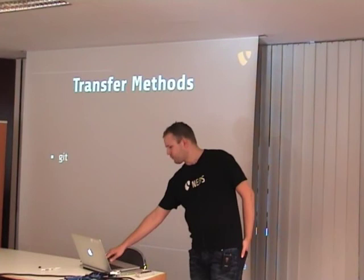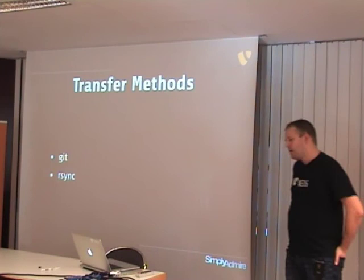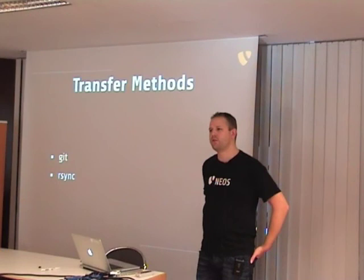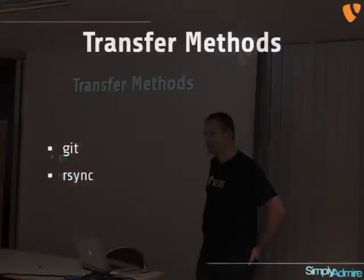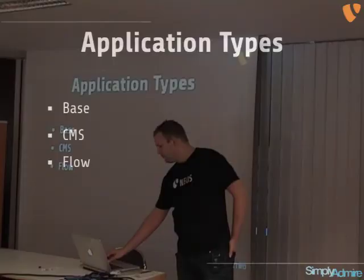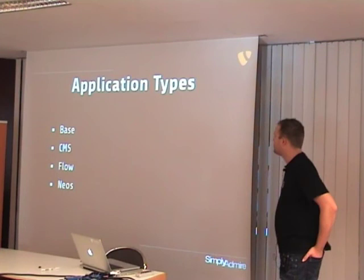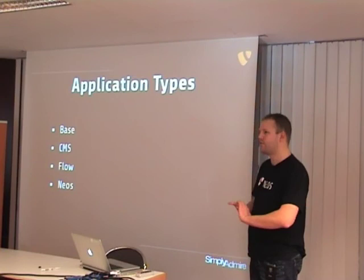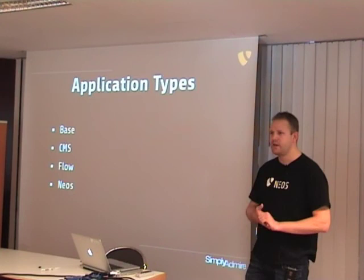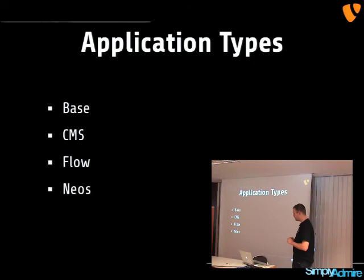Then we have a testing phase where you can verify everything is transferred and working. Then the switch, which is basically switching a symlink. If everything is working in your test, we come to the term zero-downtime deployment — because switching a symlink can almost be ignored in the time it takes, it's about milliseconds. Apache now also has modules to keep track of changing symlinks, so you can really make it a zero-downtime deployment. Then we have the cleanup. The currently supported transfer methods are Git and rsync. By default, Surf comes with four types of applications you can deploy: base application, TYPO3 CMS, Flow, and Neos.